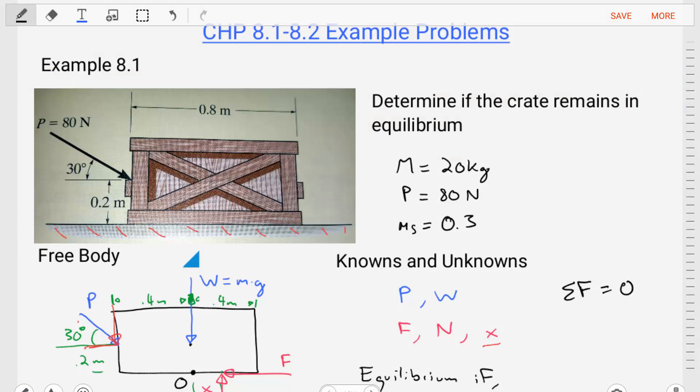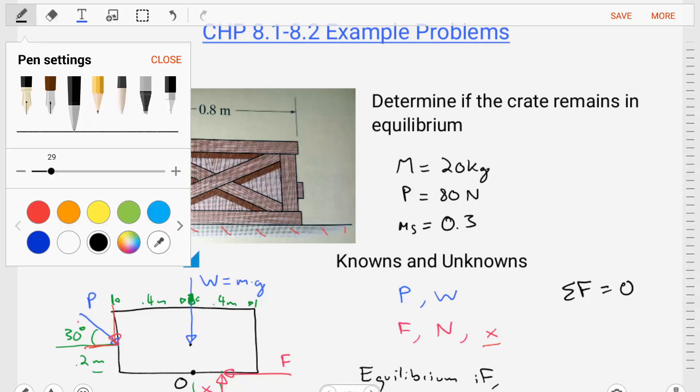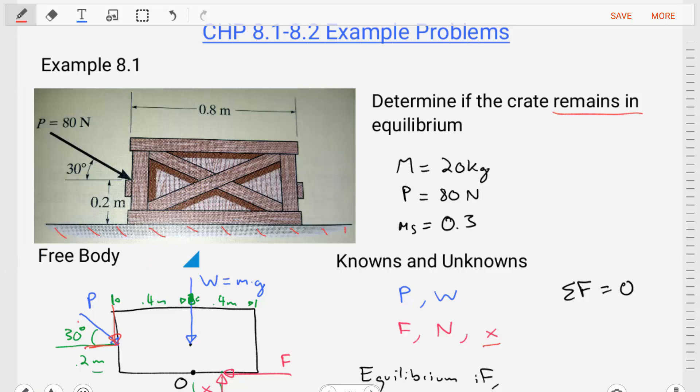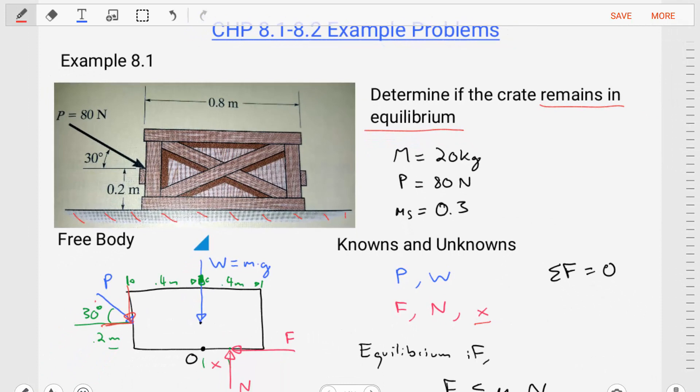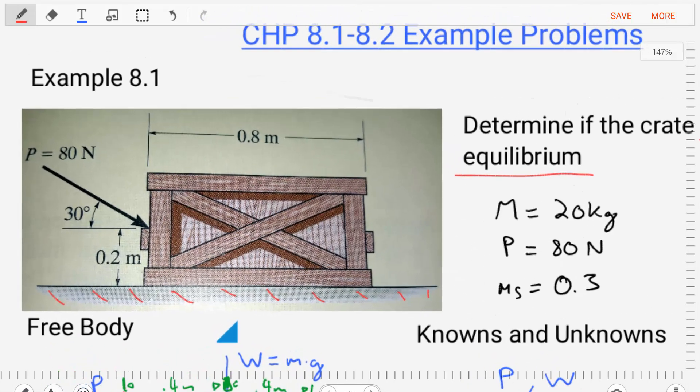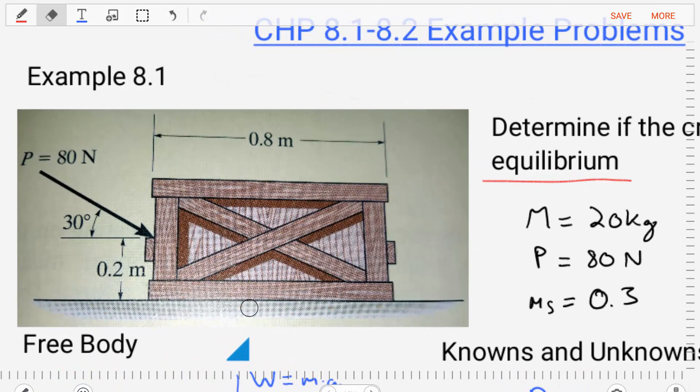This is example 8.1 from Hibbler's statics book. In this example we're asked to determine if the crate remains in equilibrium. This crate has a mass of 20 kilograms and it has a force P of 80 newtons exerted to the side of it. Between the crate and the floor there is a coefficient of static friction equal to 0.3. If we look closely at this crate we can see that that force of 80 newtons is applied at an angle of 30 degrees. It is also applied 0.2 meters up from the floor and our crate's total width is 0.8 meters.